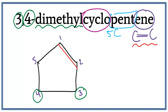So let's get rid of these numbers and draw the methyls on the third and fourth carbon. This is the structure for 3,4-dimethyl cyclopentene, or you can also call it 3,4-dimethyl cyclopent-1-ene.